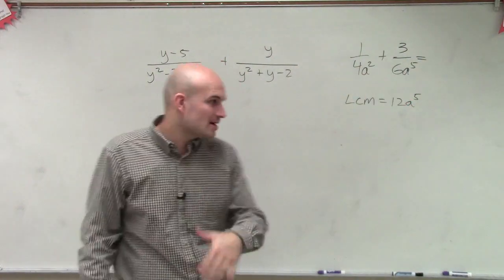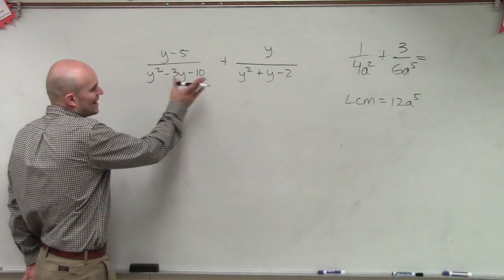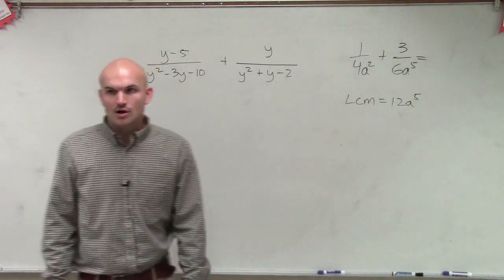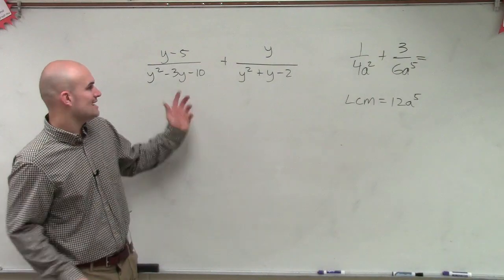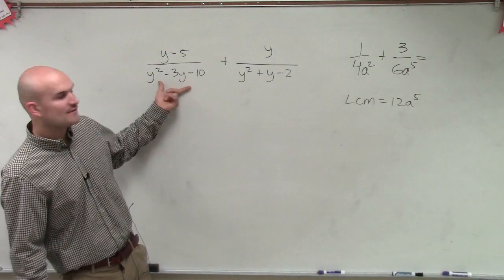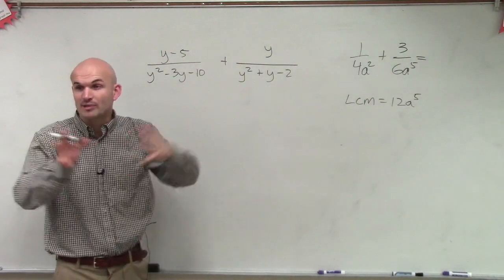But now we're coming to a problem where we have a trinomial and another trinomial. So we could, to find the LCM, we could say that's part of your LCM, and that's part of your LCM, and multiply them.